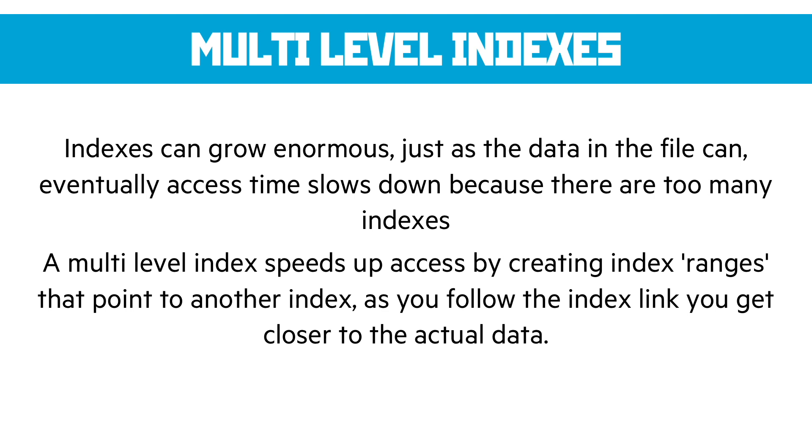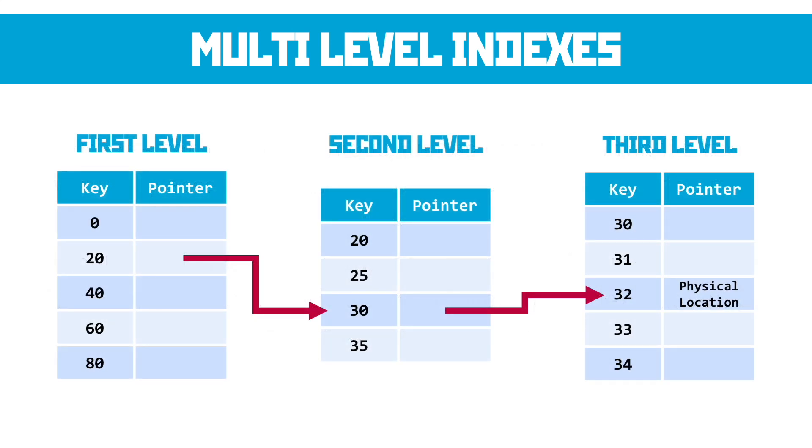Here's an example of a multi-level index. If I'm trying to find location 32, I'd start in my first level, and I'd go for the key value that is the closest to that value, or just under in this case. So that would be the 20. That would point me to a second-level index, to give me a bit more detail.